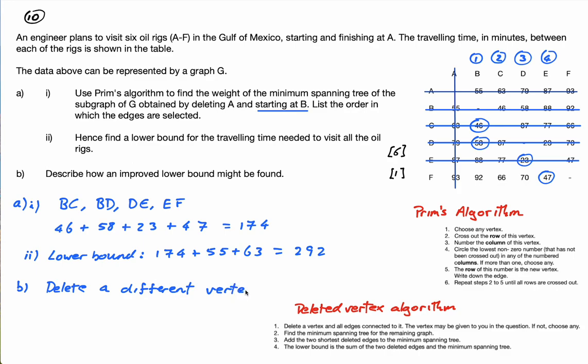That's it. And maybe if you deleted a different vertex and did that whole process, you might actually get an improved lower bound, which would be a smaller number than this.